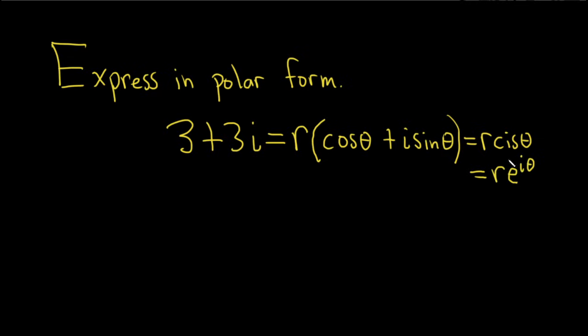So the way I do these is I always find r first. So r here is basically the square root of 3 squared plus 3 squared. If you have a complex number like this, r is equal to the square root of x squared plus y squared. So here they're both 3, so it's just the square root of 3 squared plus 3 squared.